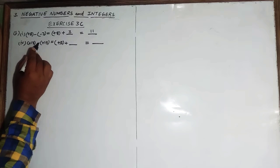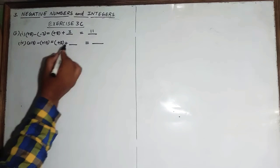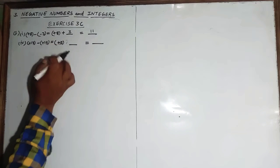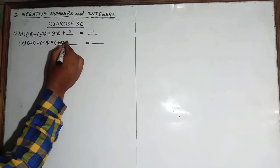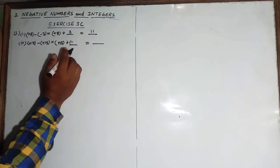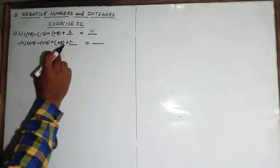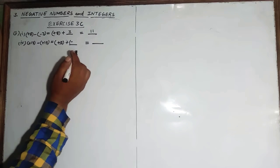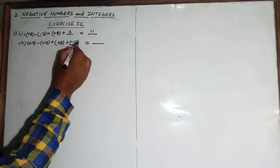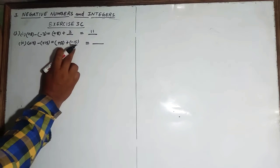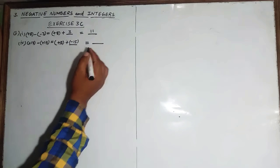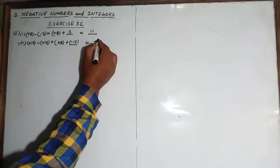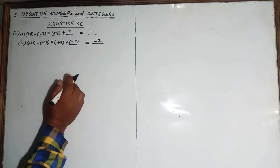Now the last part is +13 minus minus plus 15. Plus into minus will become minus, so 13 here should be plus and you will write minus 13 minus 15. It will be equal to 13 minus 15 — negative number is greater, so minus two will be the value here.